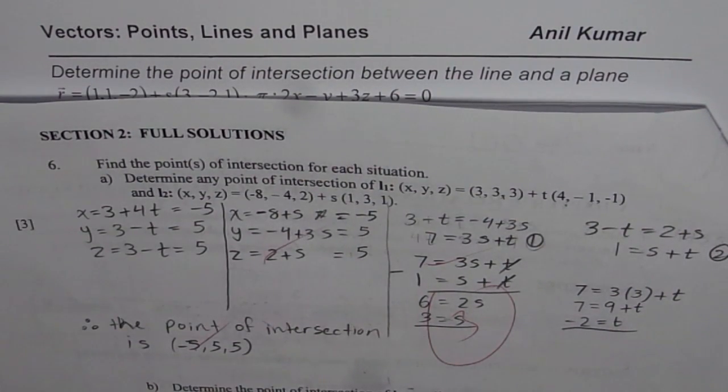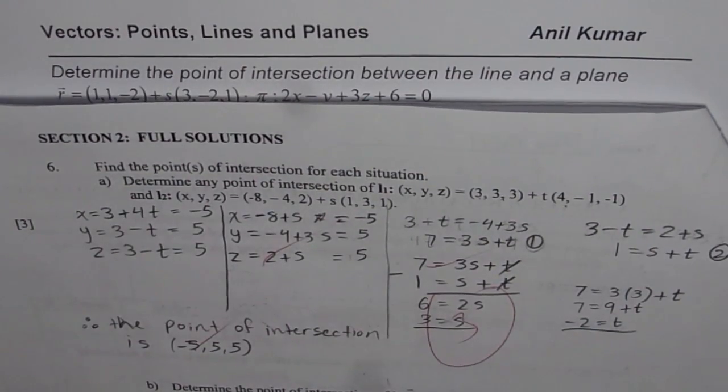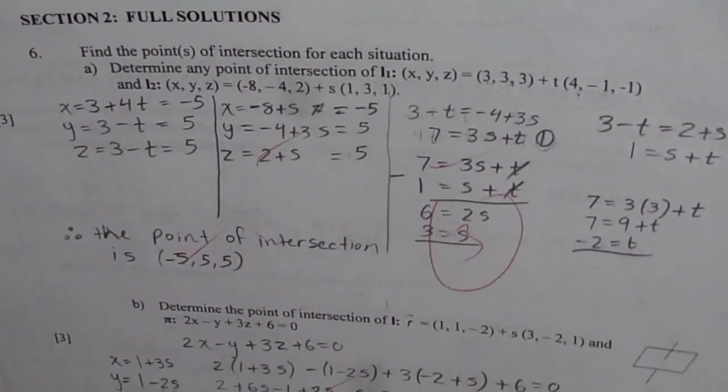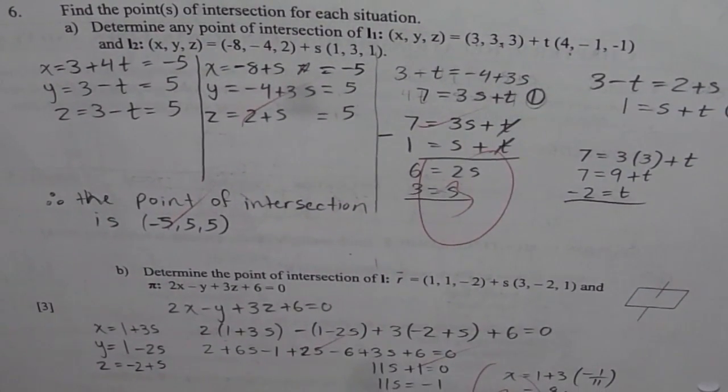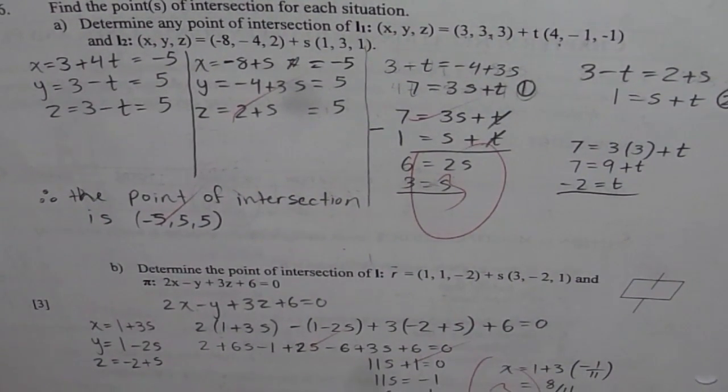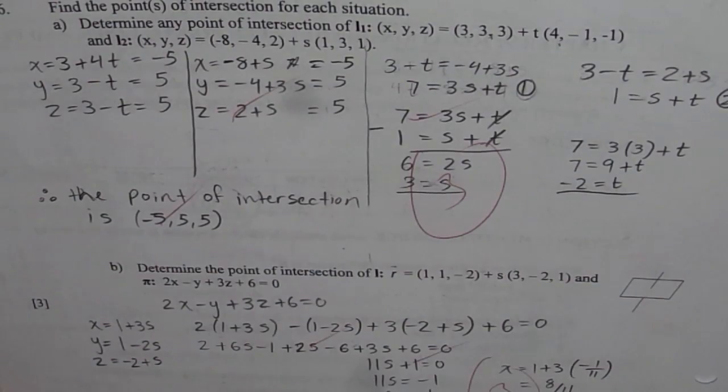Here is question number 6. We will discuss intersection of lines and planes. Part A was to determine point of intersection between two lines. And in this particular video, we are going to discuss point of intersection of a line with a plane. Now let us look into this question, part B of question 6 in details.